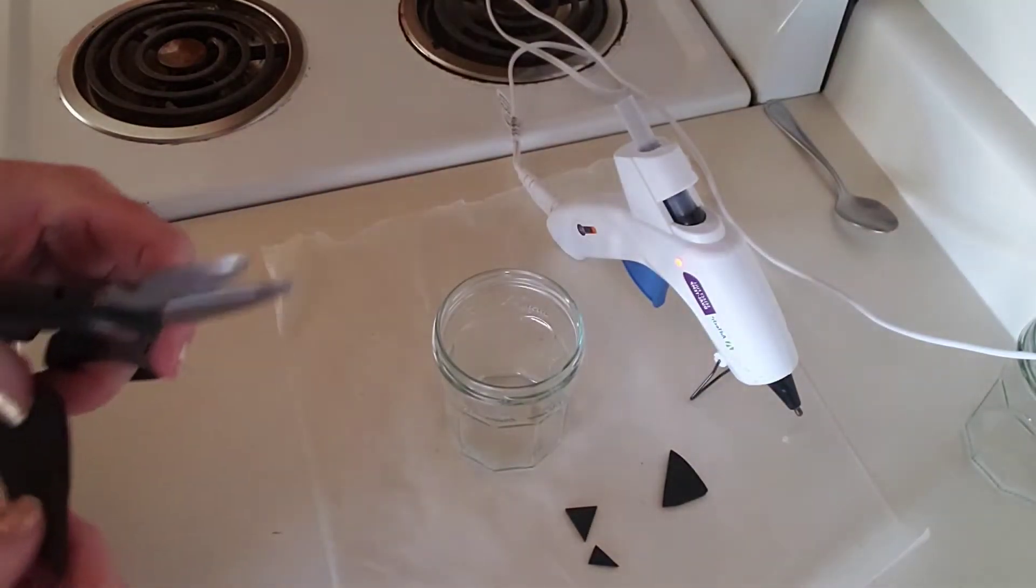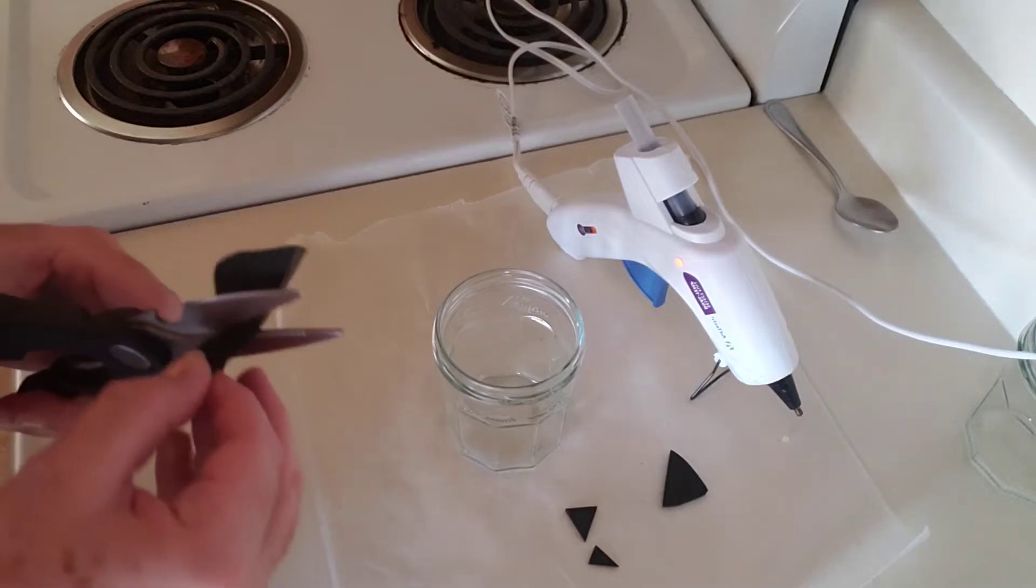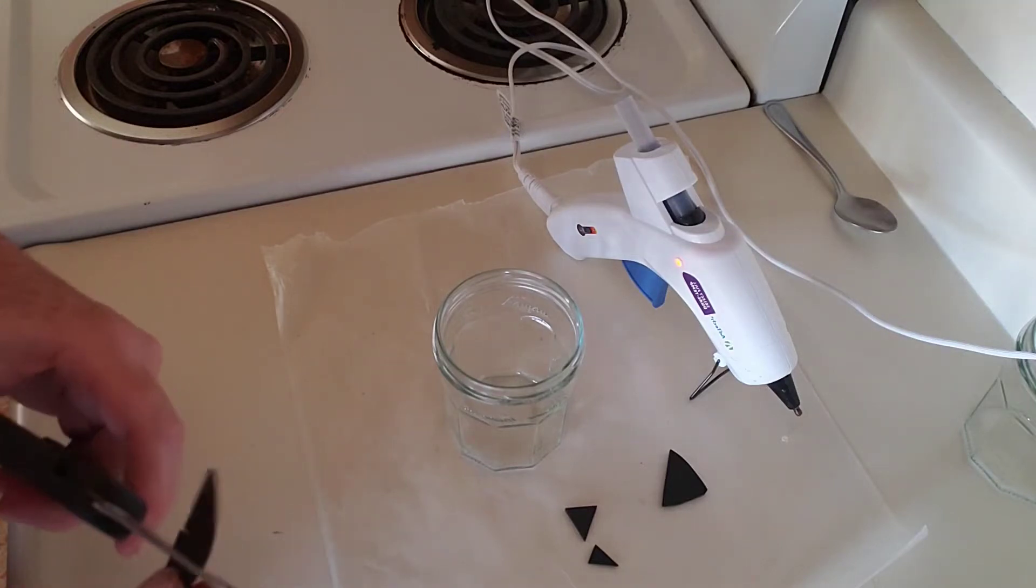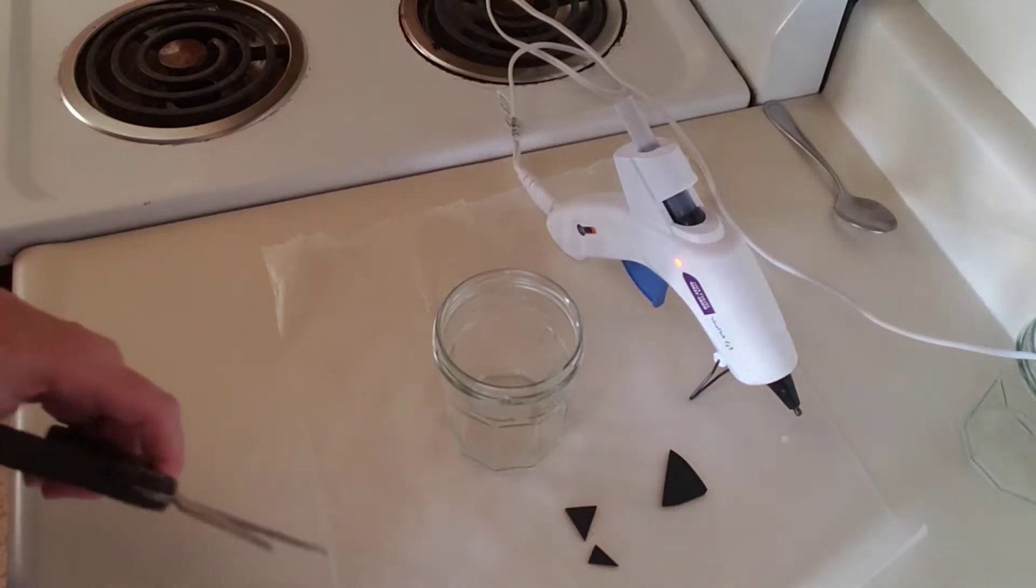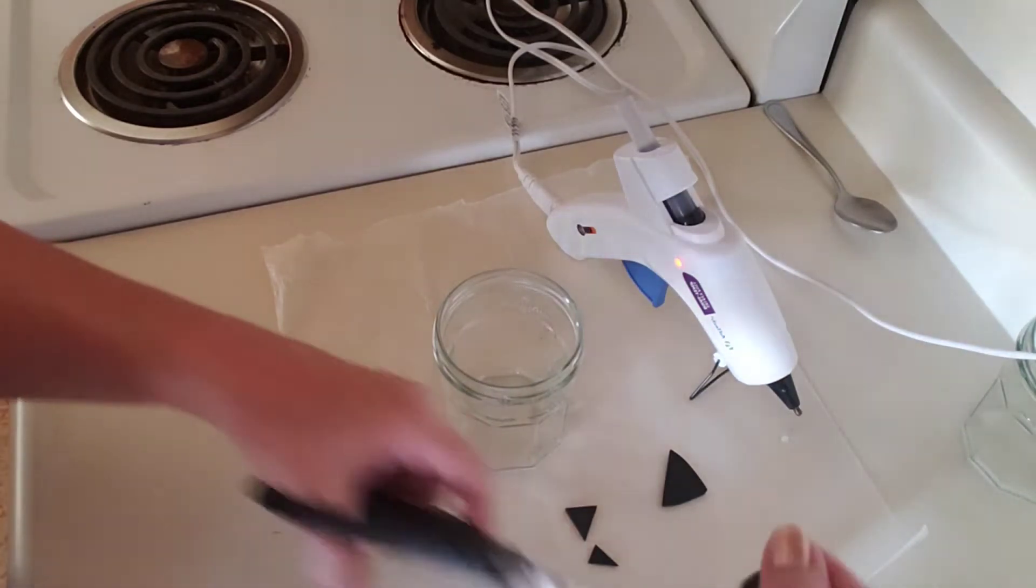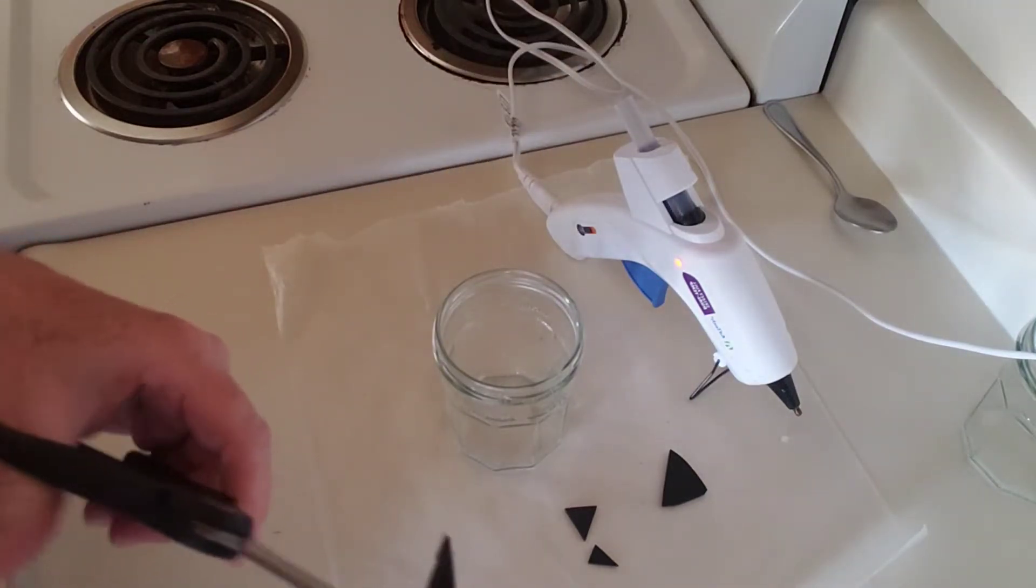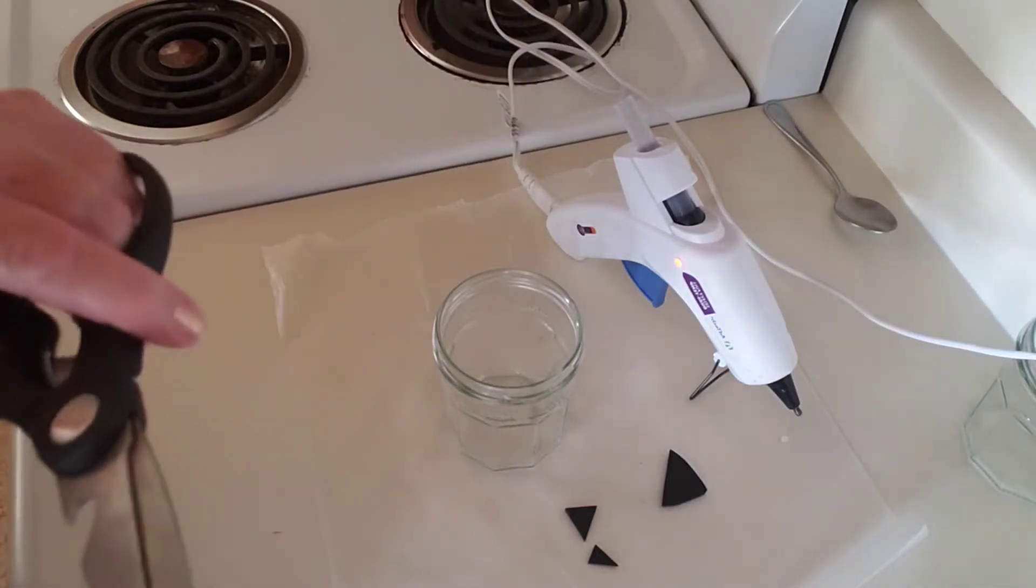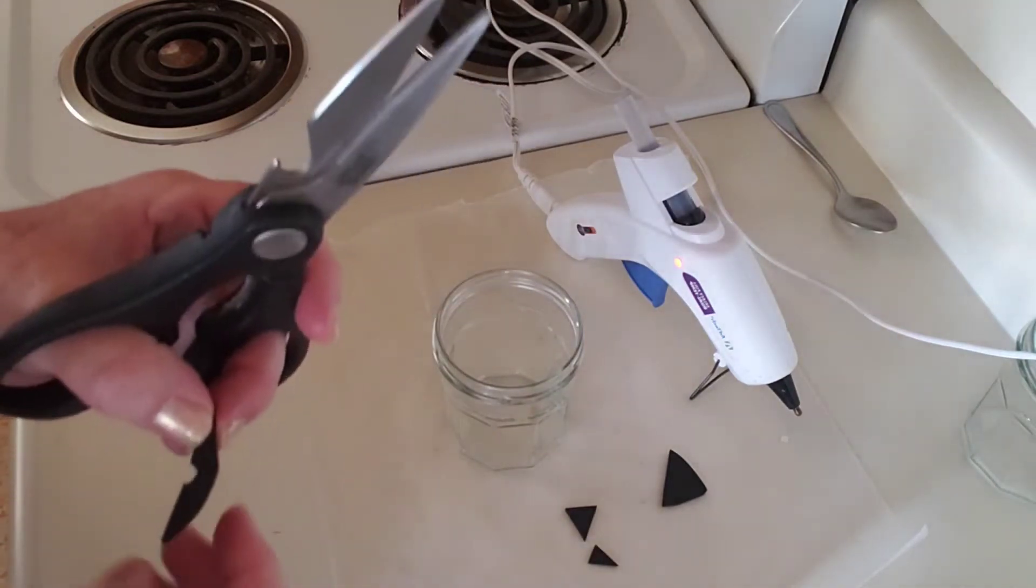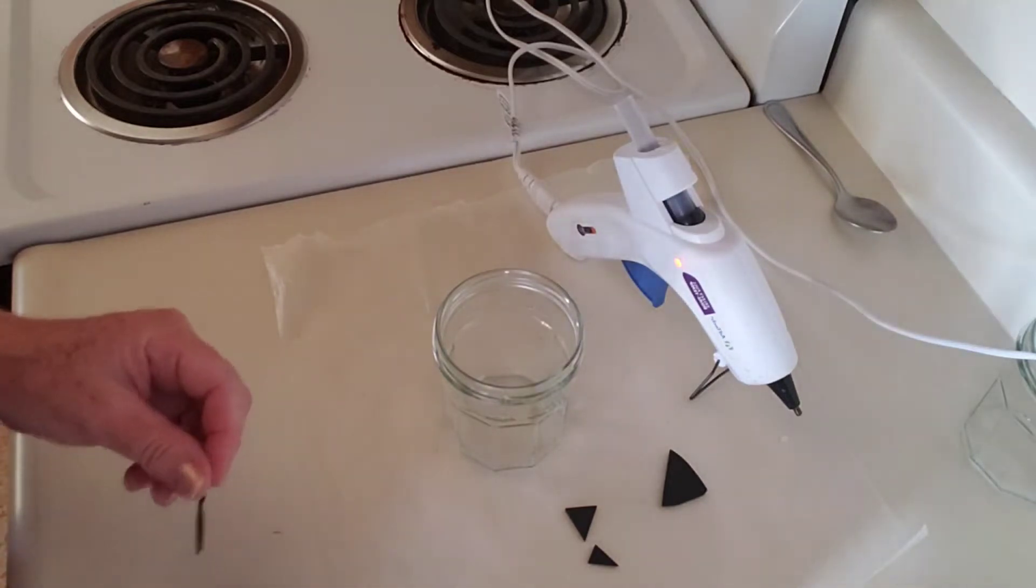I have my hot glue gun heating up. And I'm going to do that over because I cut too far and cut it in half. Okay. So I'm going to cut like a little space out in the top of my mouth for a tooth. A little opening. You can cut the face any way you want. All right. So I've got one cut out.